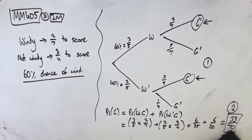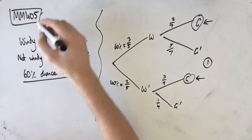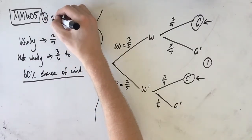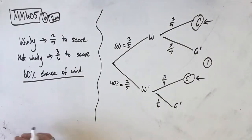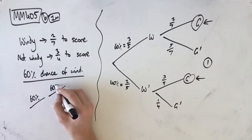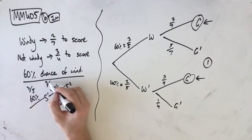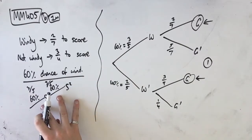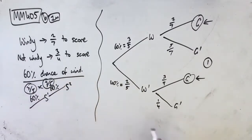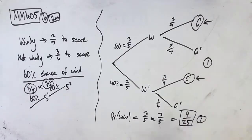Part B is simply a one-mark question and asks us to find the probability that it's windy two Sundays in a row. We have a 60% chance of wind on any given day. So if it's windy the first Sunday, that's a 60% chance, or 3 in 5. And if it's windy the second Sunday, that's also 3 in 5. If it's windy on both days, the probability of that happening is this times this. So the probability of it being windy twice equals 3 on 5 times 3 on 5, which equals 9 on 25. That's our first and only mark for part B.